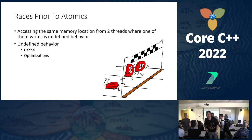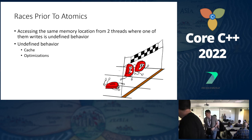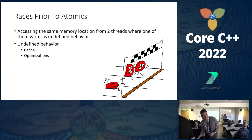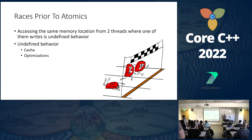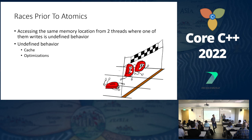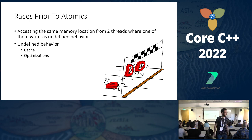The bad part is that races — until C++11 — were actually undefined behavior, and they still are without atomics. Any time you have two different threads accessing the same memory location and one of them is writing, you have undefined behavior. All bets are off, your code is completely broken, and you might not even know about it.